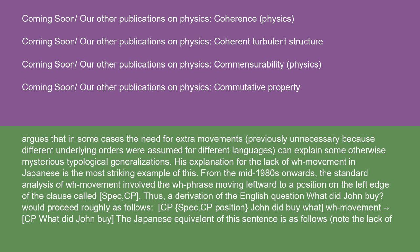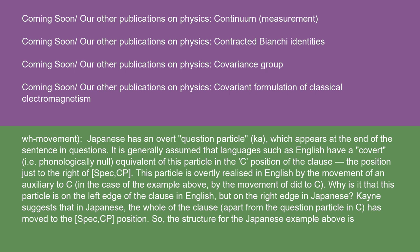Thus, a derivation of the English question 'what did John buy' would proceed roughly as follows: CP spec CP position — John did buy what — WH movement — CP: what did John buy. The Japanese equivalent of this sentence lacks WH movement. Japanese has an overt question particle ka, which appears at the end of the sentence in questions. It is generally assumed that languages such as English have a covert, i.e. phonologically null, equivalent of this particle in the C position of the clause — the position just to the right of spec CP. This particle is overtly realized in English by the movement of an auxiliary to C — in this case, by the movement of did to C. Why is it that this particle is on the left edge of the clause in English, but on the right edge in Japanese?